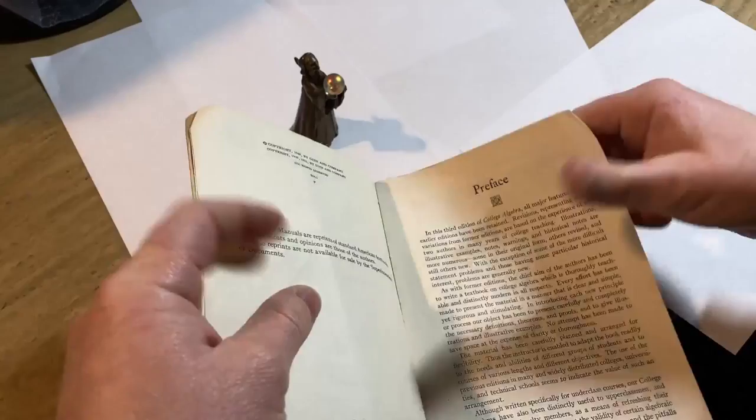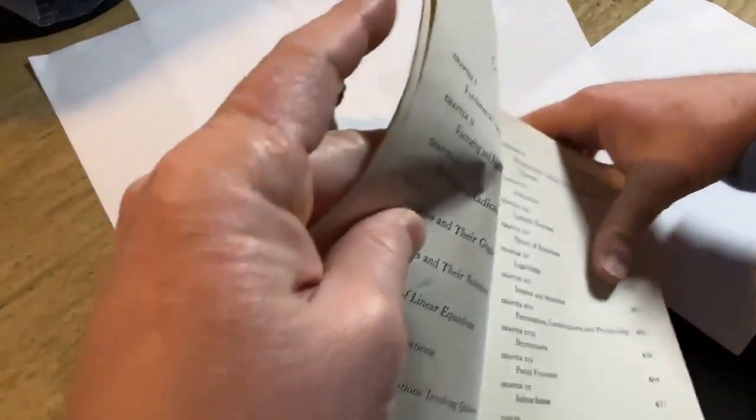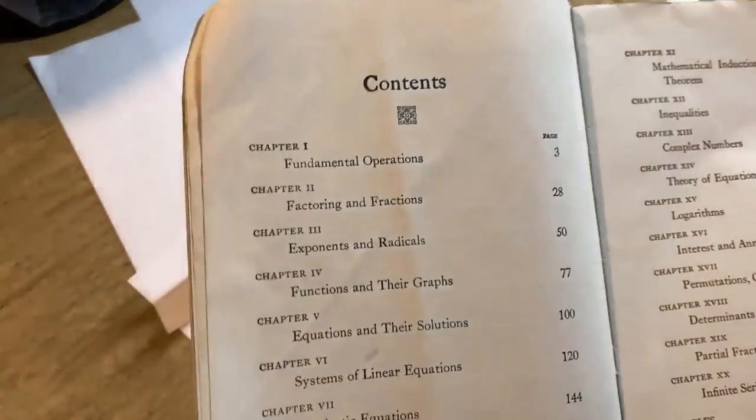Education manuals are reprints of standard American textbooks. The statements and opinions are those of the authors. These reprints are not available for sale by the superintendent of documents. And so this is a standard college algebra book. Let's take a look at the topics and some of the math. This is actually a really good book.